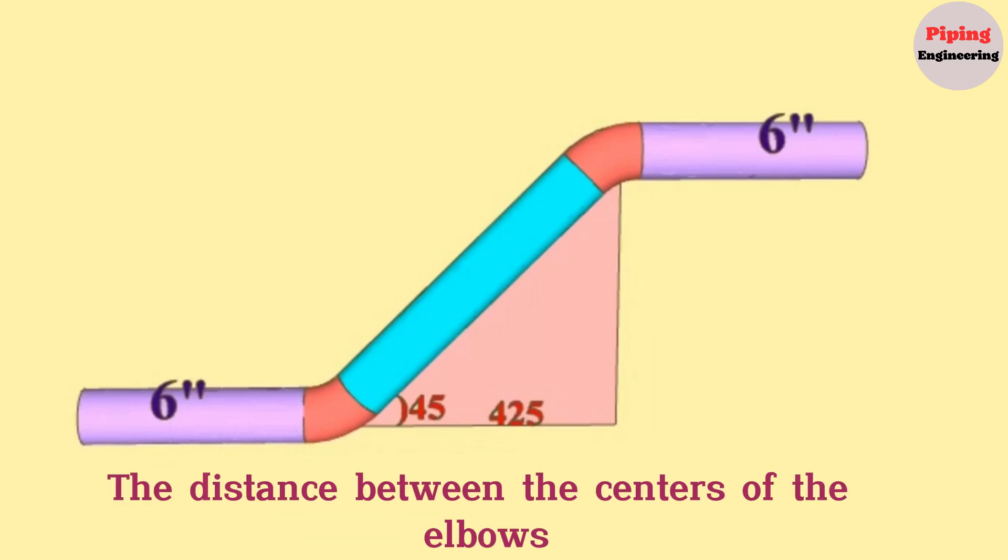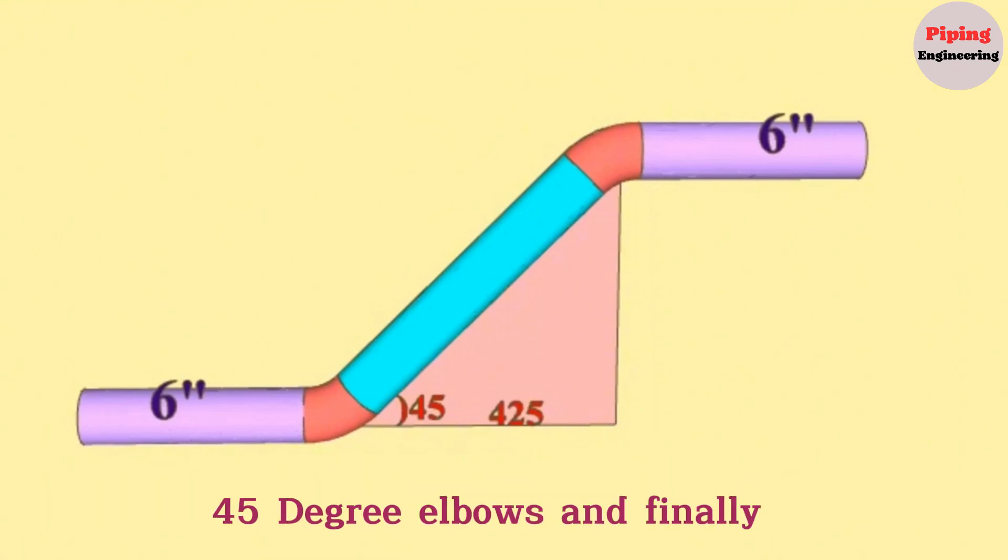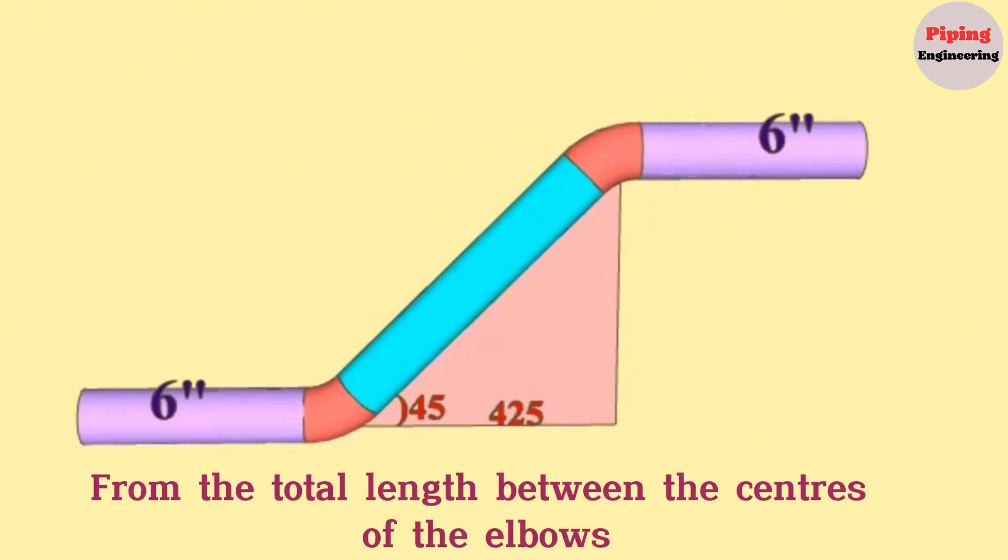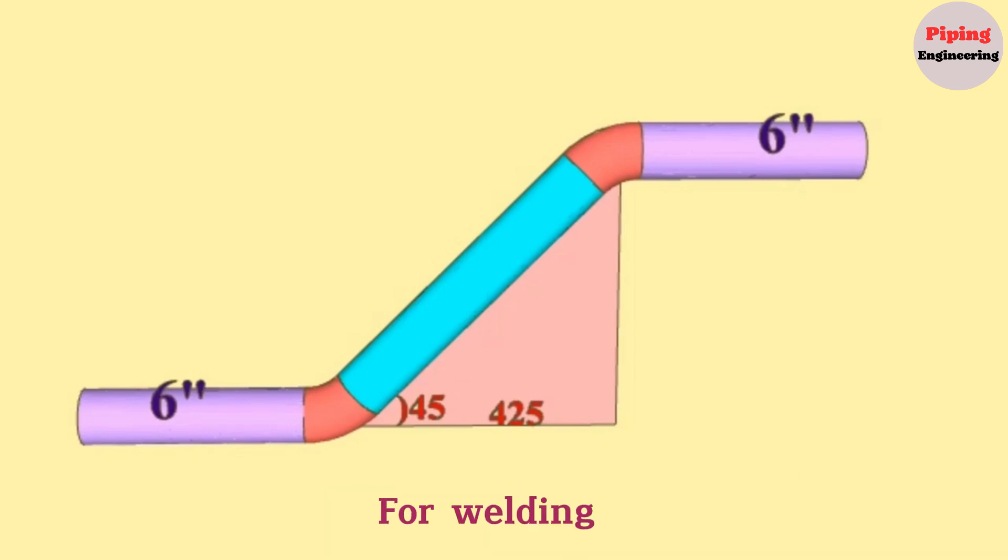To find the length of the pipe piece between these two elbows, first we must calculate the distance between the centers of the elbows. Next, we need to find the lengths of the 6-inch 45-degree elbows. And finally, from the total length between the centers of the elbows, we will subtract the lengths of the elbows and the gaps for welding. Let's go step by step.